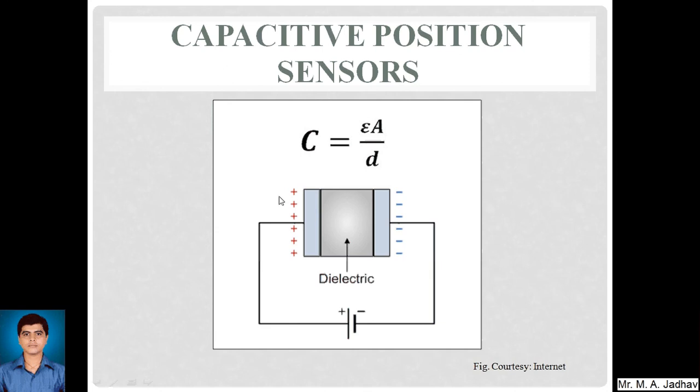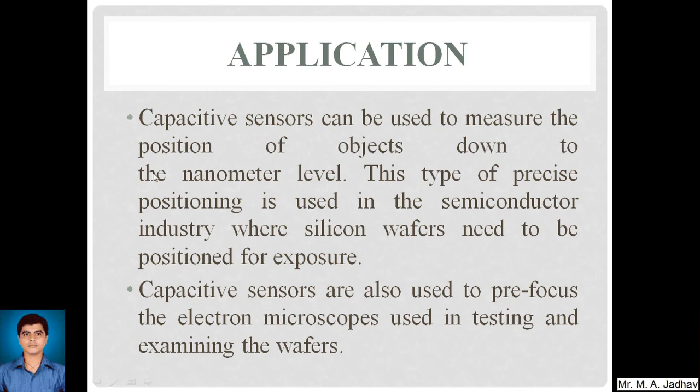By connecting the capacitor to an object, the position of that object can be determined using this type of sensor. Capacitive sensors can measure position down to the nanometer level, making them very accurate and precise. This type of precise positioning is used in the semiconductor industry, where silicon wafers need to be positioned for exposures. Capacitive sensors are also used to pre-focus electron microscopes used in testing and examining wafers, which are very thin material layers of silicon with thickness in the nanometer range.